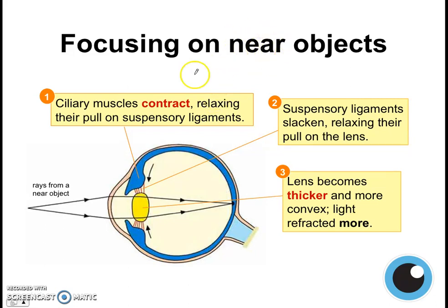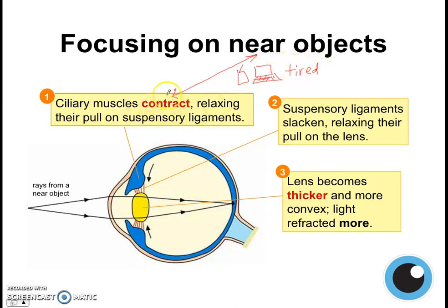So how do you remember that for near objects the ciliary muscles contract? A helpful way to think about it: when you look at a near object — like your phone or computer screen — your eyes tend to become very tired. That's because your ciliary muscles are contracting. The muscles are working hard to focus on the near object for a long time. That's also why they tell you every 20 minutes to take a break and look at distant objects to relax the muscles in your eye. Looking at near objects is more tiring because your ciliary muscles are contracted.